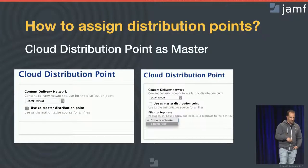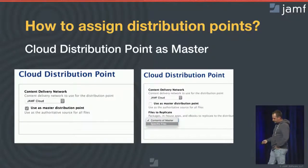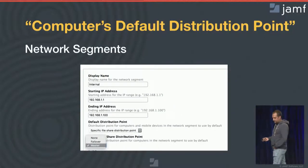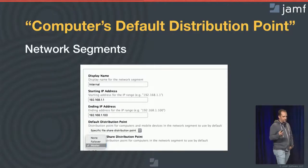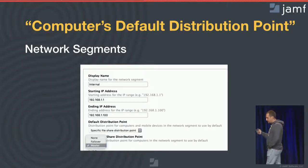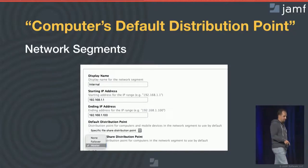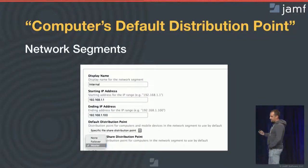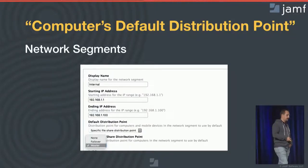Instead of pointing your Macs directly to a specific distribution point, you can play with network segments to define each computer's default distribution point. In the settings of Jamf Pro, under network segments, you can define an IP range and select the distribution point that all Macs in that specific IP range should use. That's quite handy if you have multiple locations managing multiple subnets, to ensure the Mac will try to download content from the nearest distribution point.